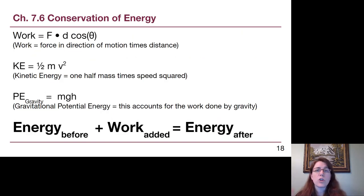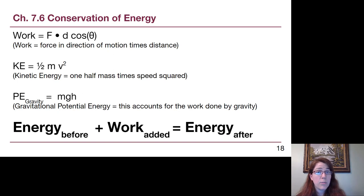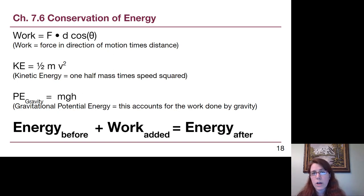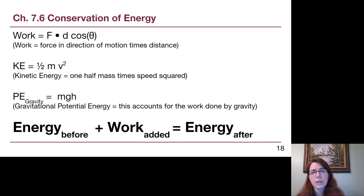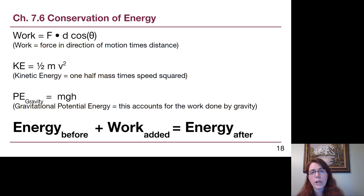This slide has all of the Chapter 7 tools we've talked about so far: work equals force in the direction of motion times distance; kinetic energy equals one-half mass times speed squared; gravitational potential energy equals mass times g times height h. In bold at the bottom is the key problem-solving tool: energy before, plus work added (positive or negative), equals energy after.